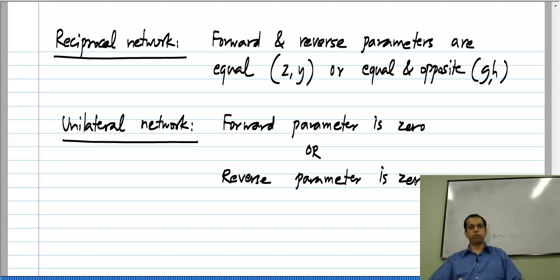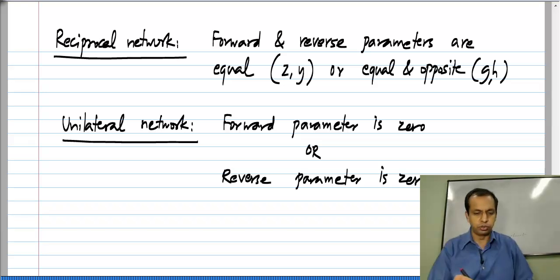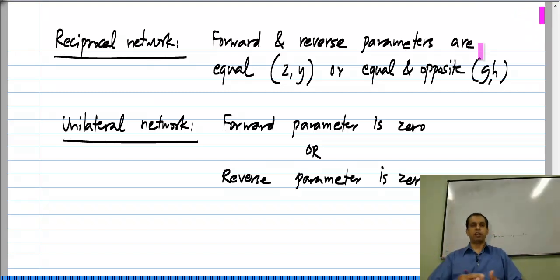The main thing to emphasize is that there is a property called reciprocity and another called being unilateral, and these are unrelated to which parameter set you choose — whichever you choose, they come out the same. We notice that resistive networks seem to be reciprocal: the amount of forward transmission equals the amount of reverse transmission. This is not just a coincidence due to the particular example we chose — it is a general property of resistive networks, and we are going to prove that in the next lesson.